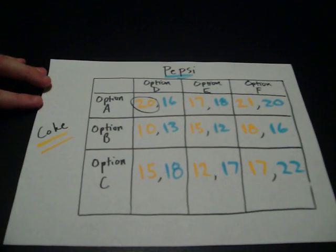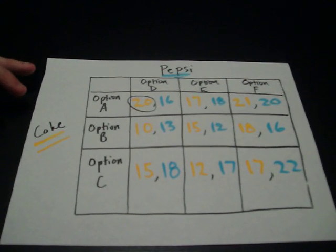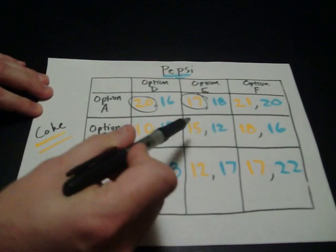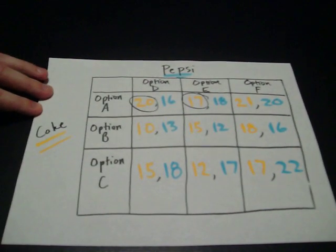Let's say that Pepsi says, we're going to pick option E. Coke, in response to that, would want to pick option A again to get $17 million. If they pick B, they only get $15 million. If they pick C, they only get $12 million.